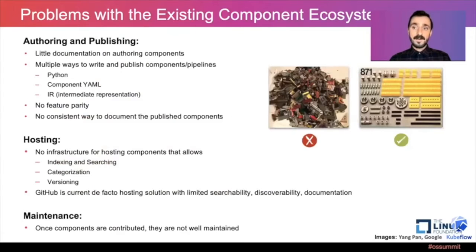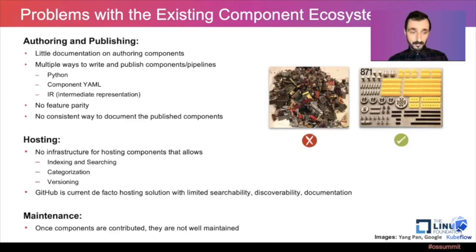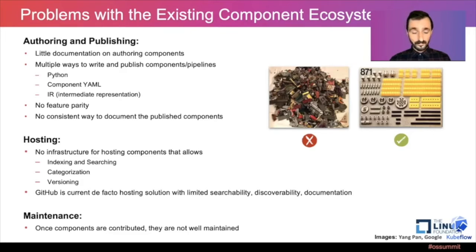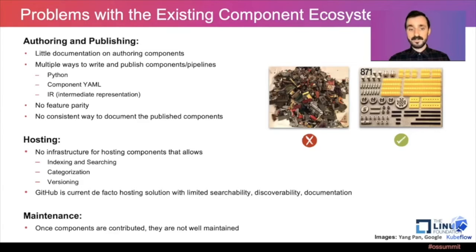With that rich ecosystem there are a few problems. They start with authoring and publishing components — there are multiple ways to create components: they can be authored via Python, the YAML can be specified directly, and in v2 of Kubeflow Pipelines there's also an intermediate representation. Between those multiple ways there's no feature parity and no consistent way to publish and document components. Hosting is currently GitHub, with no good indexing or searching, components are not well versioned, there aren't many ways to categorize them, and once contributed they are often not well maintained.